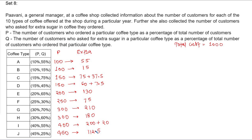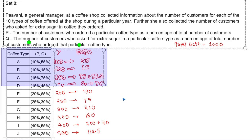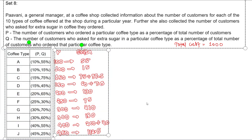From this, we observe that the total number of orders is the sum of column P values, and that sum is greater than 1000. So we can conclude there are customers who ordered more than one type of coffee. I'll copy this data and paste it on the next slide.